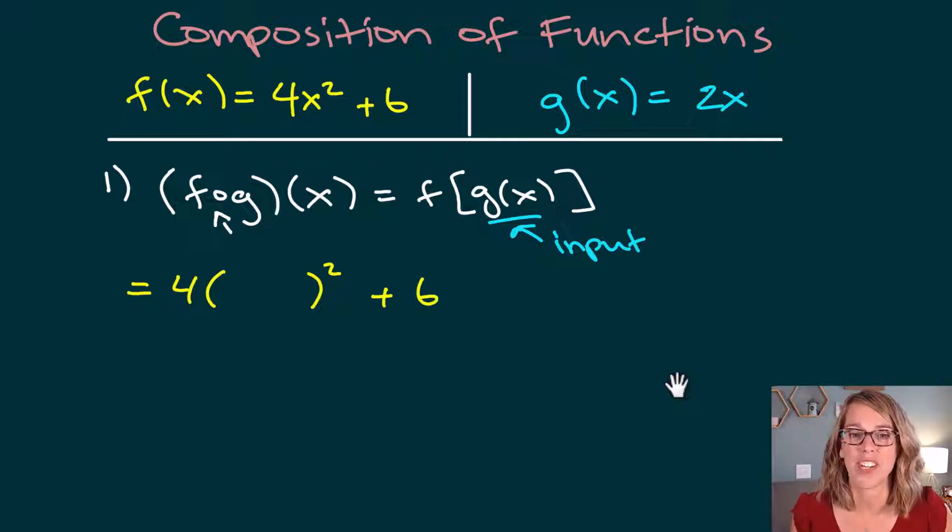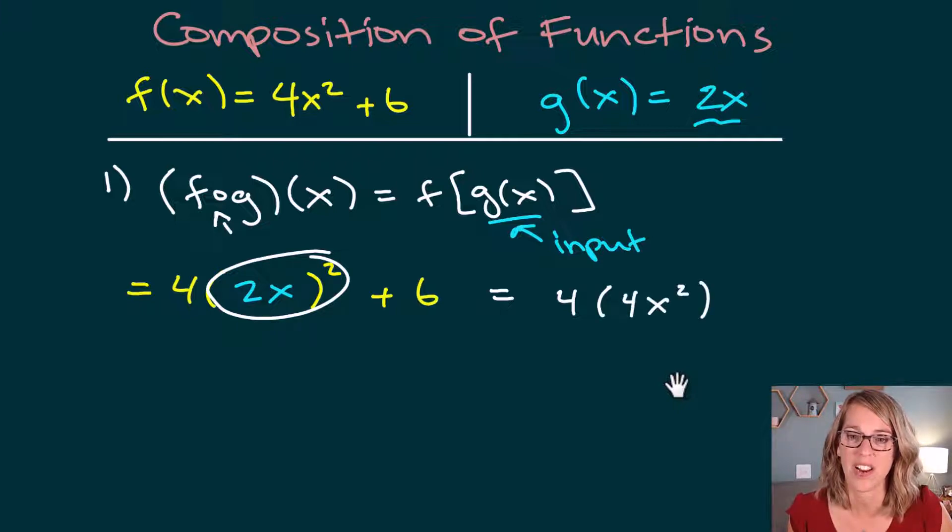Well, I am giving my function g(x), which happens to be 2x. So my new input is a 2x. So I've got 4 times 2x squared plus 6. Let's go ahead and do the algebra here. So that's 4 times 4x squared plus 6, and we end up with 16x squared plus 6.